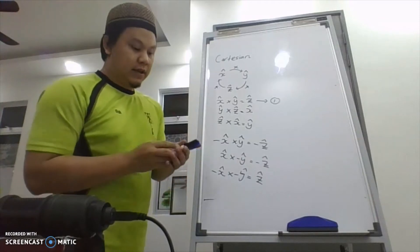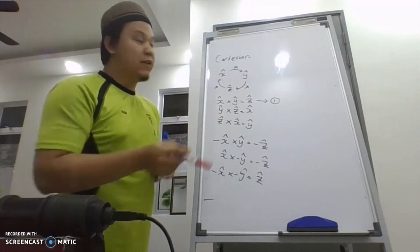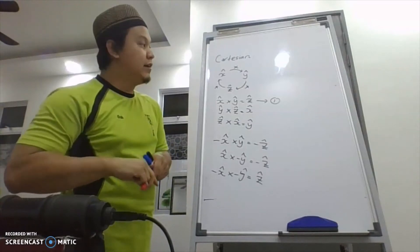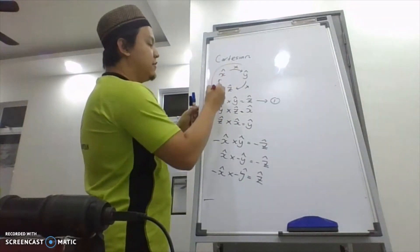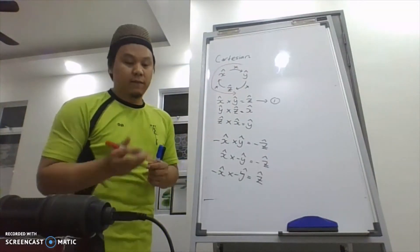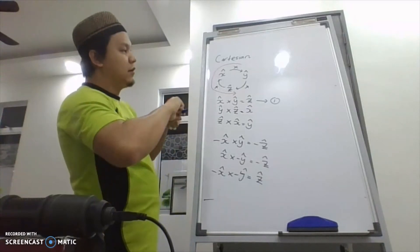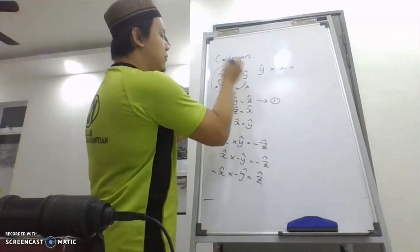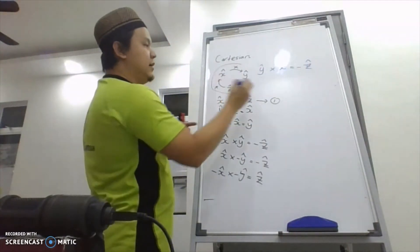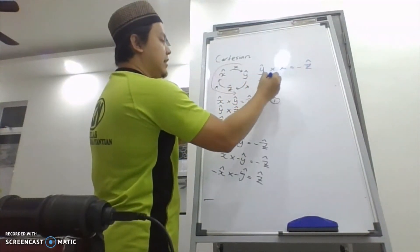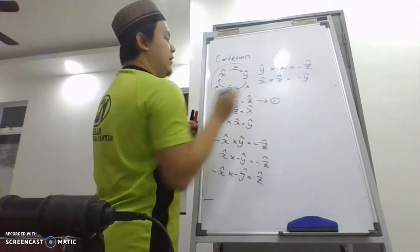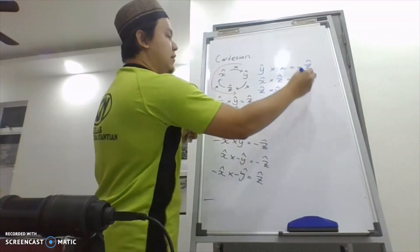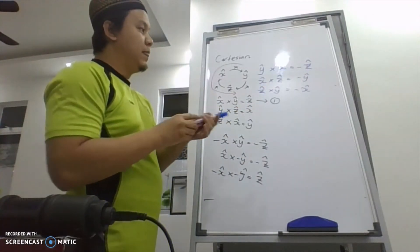This is when we follow the clockwise sequence. But when we follow the other sequence — the counterclockwise direction — it becomes negative. For example, y cross x gives negative z, and x cross z gives negative y.